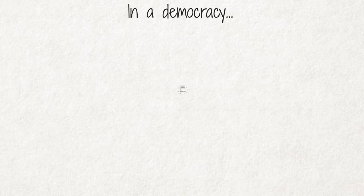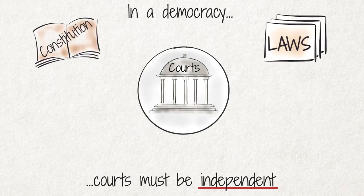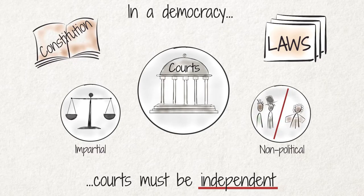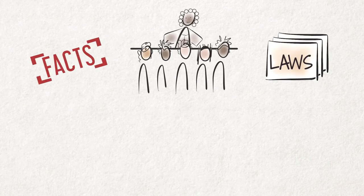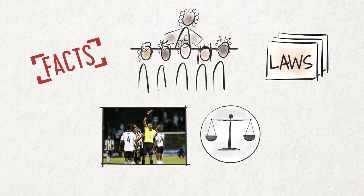In a democracy, the courts must be independent and subject only to the authority of the constitution and the law, to be able to make impartial decisions and not be influenced by political or personal considerations. In other words, they must make decisions based only on the facts and the law relating to a particular case. In one way, the courts do a similar job to the referee of a soccer match. A referee has to enforce the rules to ensure the game is fair and the players do not break the rules.